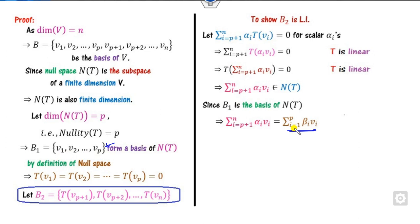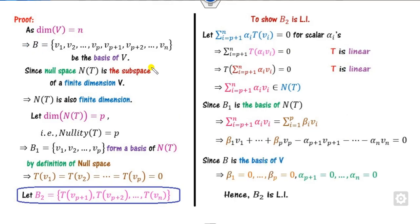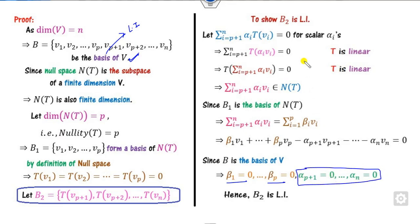Since it belongs to the kernel spanned by B1 (from index 1 to P), opening the bracket gives beta_1 V_1 + ... + beta_P V_P. Together, these span V1 to VN, which are all elements of the basis B. Since B is a basis, these vectors are linearly independent, so all coefficients are 0. Therefore, B2 is linearly independent.